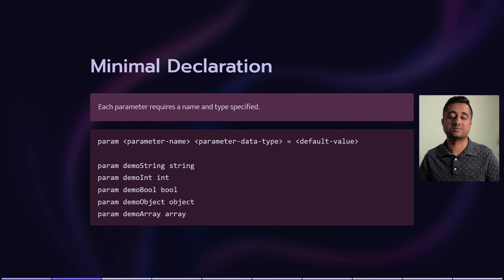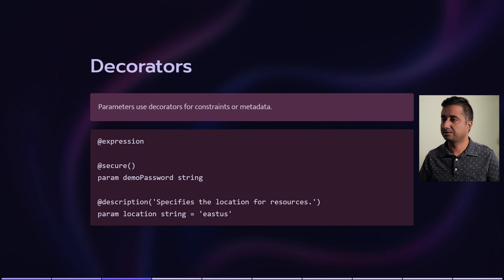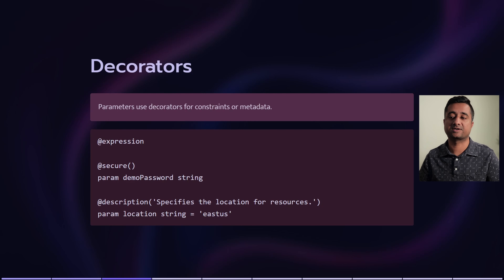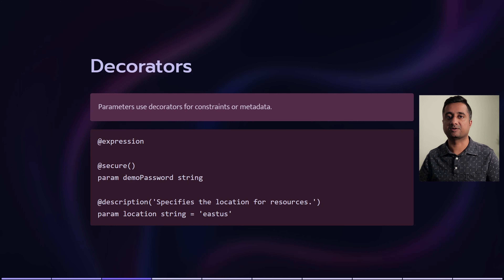Let's look into an example. The first one is a demo string — the parameter name is demo string and the type is string. We also have integer, boolean, object, and array. You can have multiple different types declared.